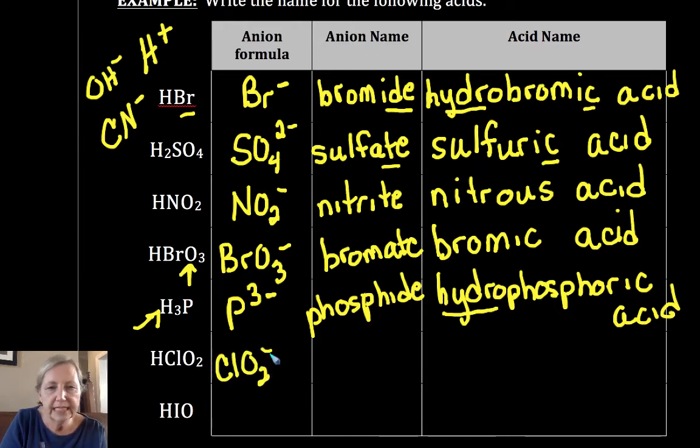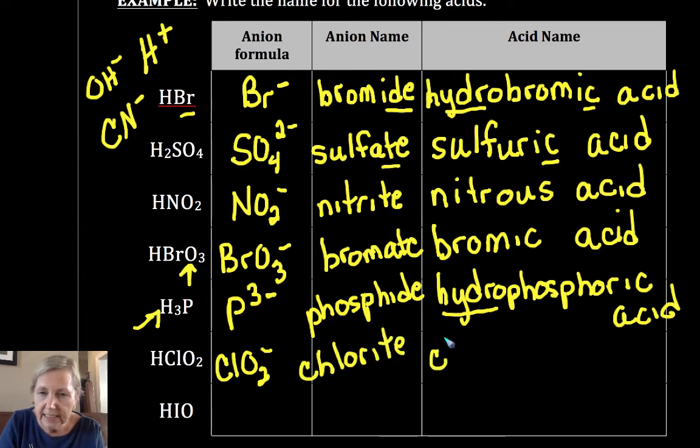ClO2-. That is chlorite. -Ite goes to -ous. So that becomes chlorous acid.